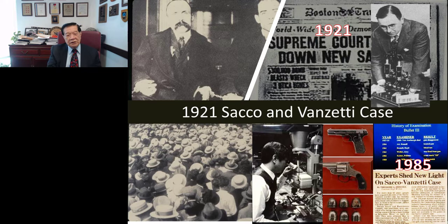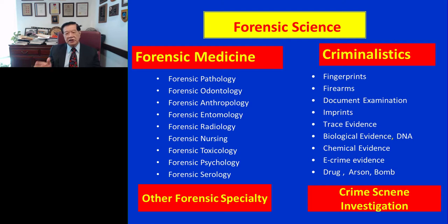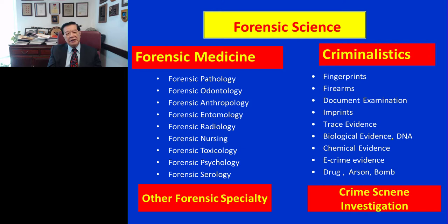The technique used in the 1920s in the Sacco-Vanzetti case was basically microscopic examination using a comparison scope — still used today. However, the forensic field has shifted from generalists to specialists. Today there are approximately 20 different special disciplines: forensic pathology, forensic odontology, forensic anthropology, forensic entomology, forensic radiology, forensic nursing, forensic toxicology, forensic psychology, and forensic serology. Some of those areas fall under forensic medicine; others are listed as forensic specialties.